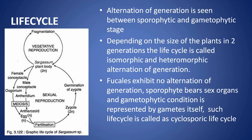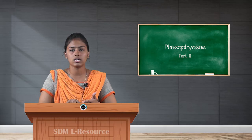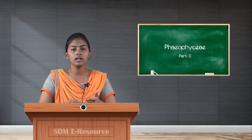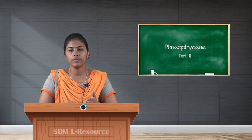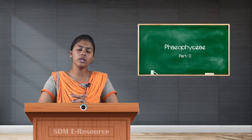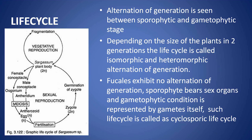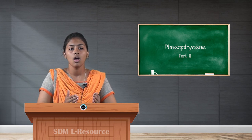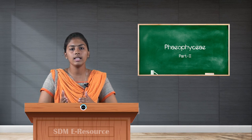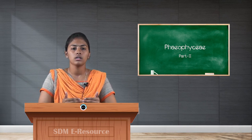If the size of the two generations — sporophytic and gametophytic — is the same or similar, it is called isomorphic alternation of generation. If the sizes differ, it is called heteromorphic alternation of generation. Another peculiar character in Phaeophyceae, mainly in Fucales, is that they exhibit a cyclosporic life cycle — that is, the sporophyte itself contains the gametes. Hence there is no differentiation between the thallus of the sporophyte and the gametophyte, and it is called a cyclosporic type of life cycle.